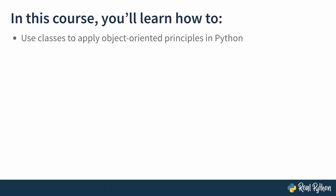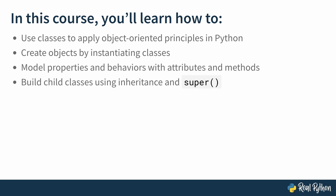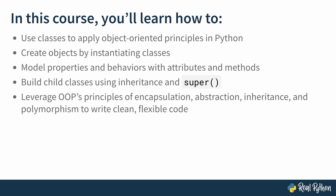In this course, you'll learn how to use classes to apply object-oriented principles in Python, create objects by instantiating those classes, model the properties and behaviors of real-world systems using attributes and methods, build child classes using inheritance and the built-in super function, and leverage OOP's principles of encapsulation, abstraction, inheritance, and polymorphism to write clean, flexible code.